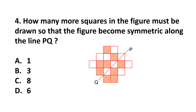Question 4: How many more squares in the figure must be drawn so that the figure becomes symmetric along the line PQ? PQ is the line of symmetry. Counting squares on one side gives 9, and the other side has 6. We need to add 3 more squares to make PQ the line of symmetry. Answer: option B, 3.